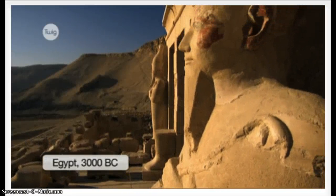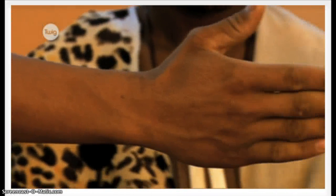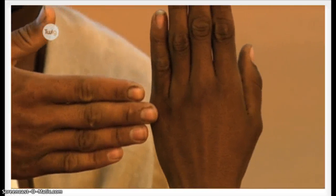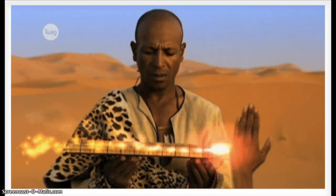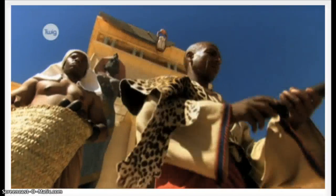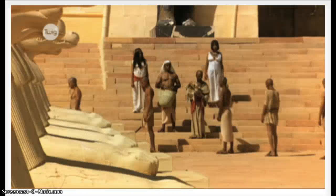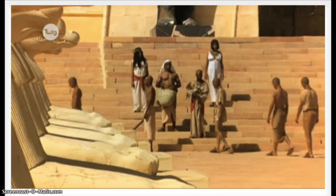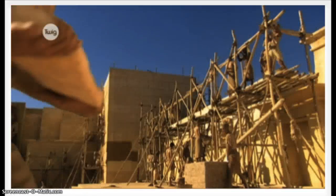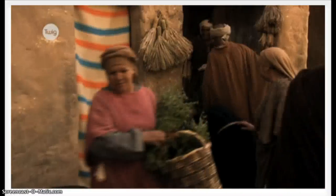In ancient Egypt, the base unit of length was a cubit — a measurement that varied depending on the length of a person's forearms, hands, and palms. To avoid these variations, the Egyptians created a standard royal cubit. Copies were produced in granite and distributed to standardize measurement, allowing construction to flourish. Similar systems developed around the world, but they tended to be specific to a region, making trading difficult.